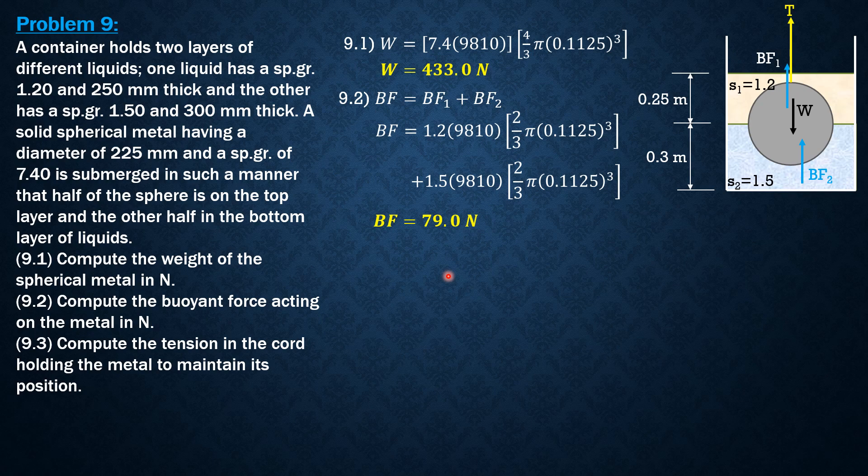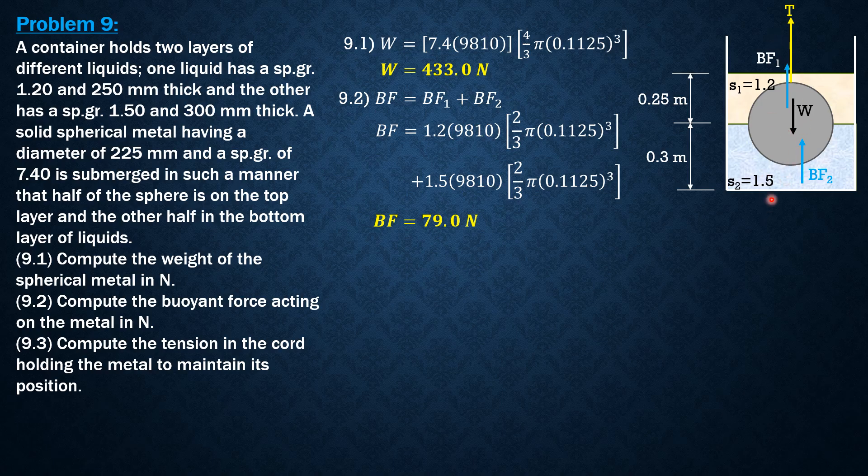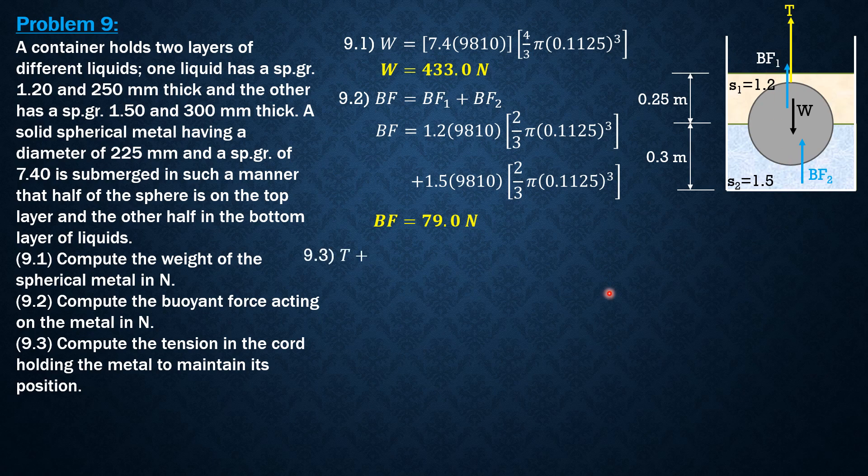We apply equilibrium equation: summation of forces in y equals 0, so tension plus BF equals W. Tension plus buoyant force equals W, so tension plus 79 equals 433. Therefore, the tension equals 354 newtons.